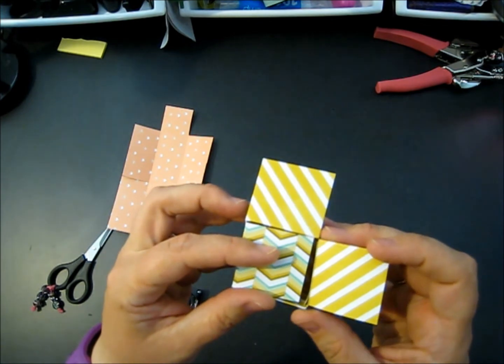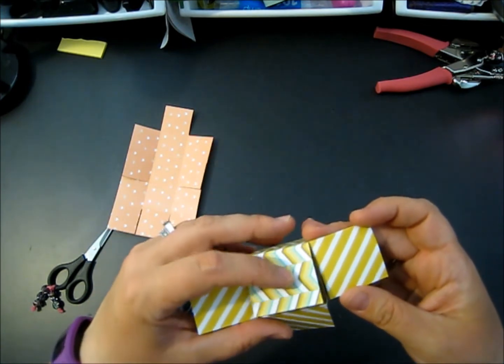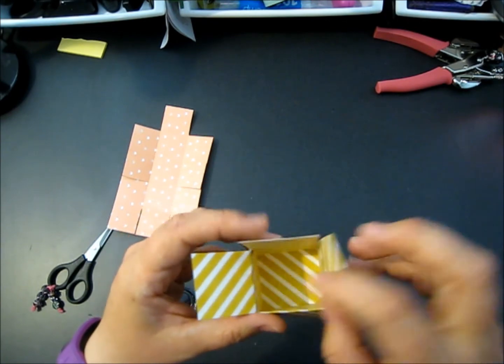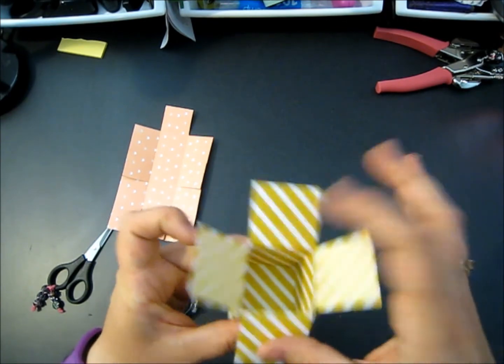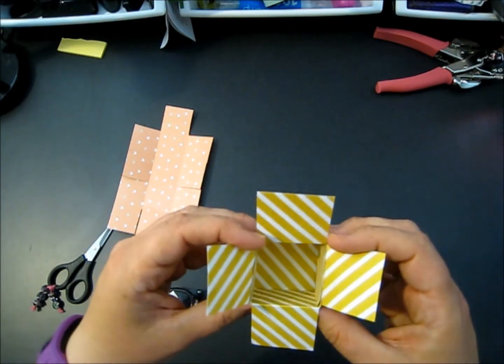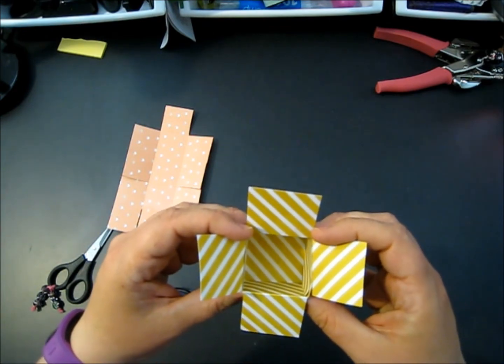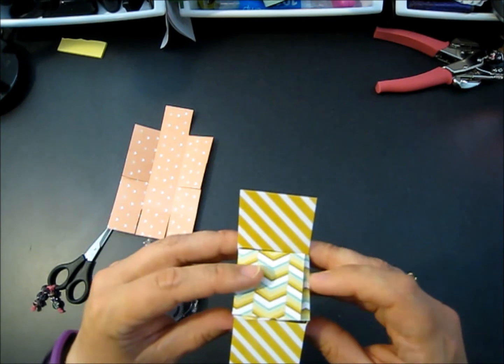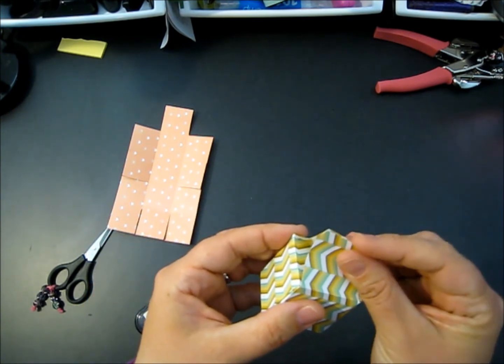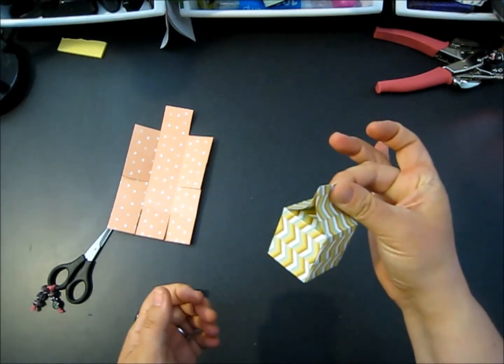Now when you fold these guys in, you'll notice that some of them are shorter and some are longer. I want the short ones in. So you put your little earrings or ring in, whatever you want to fill it with, and then you fold this up and you're going to take these two and pinch them like this.